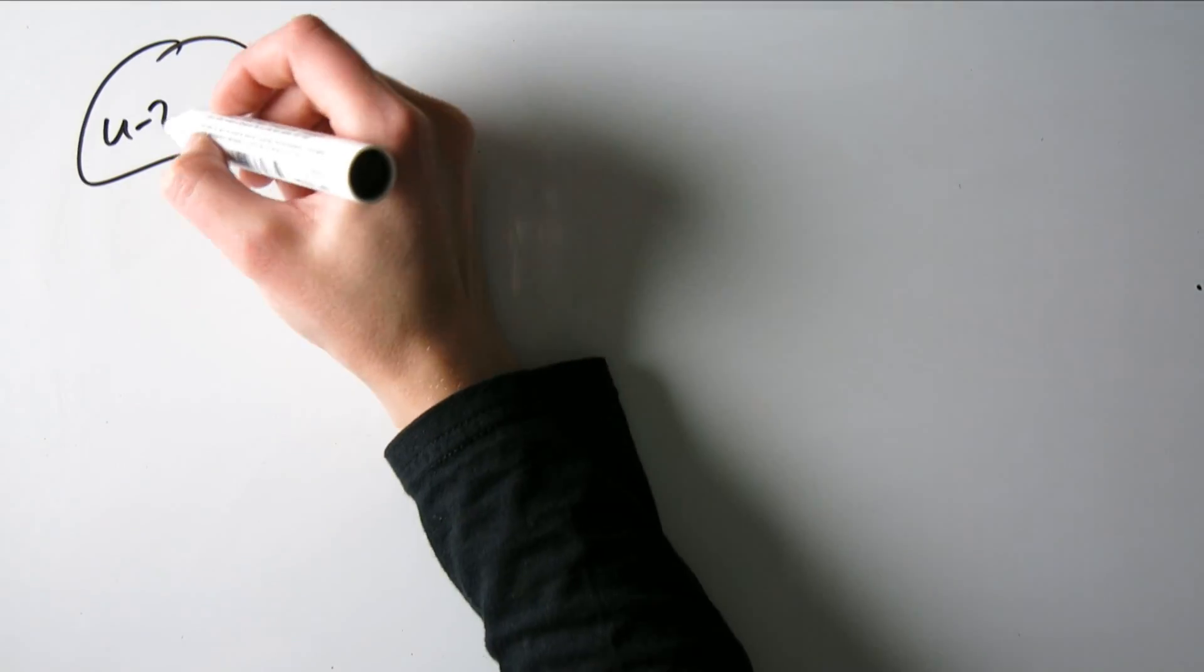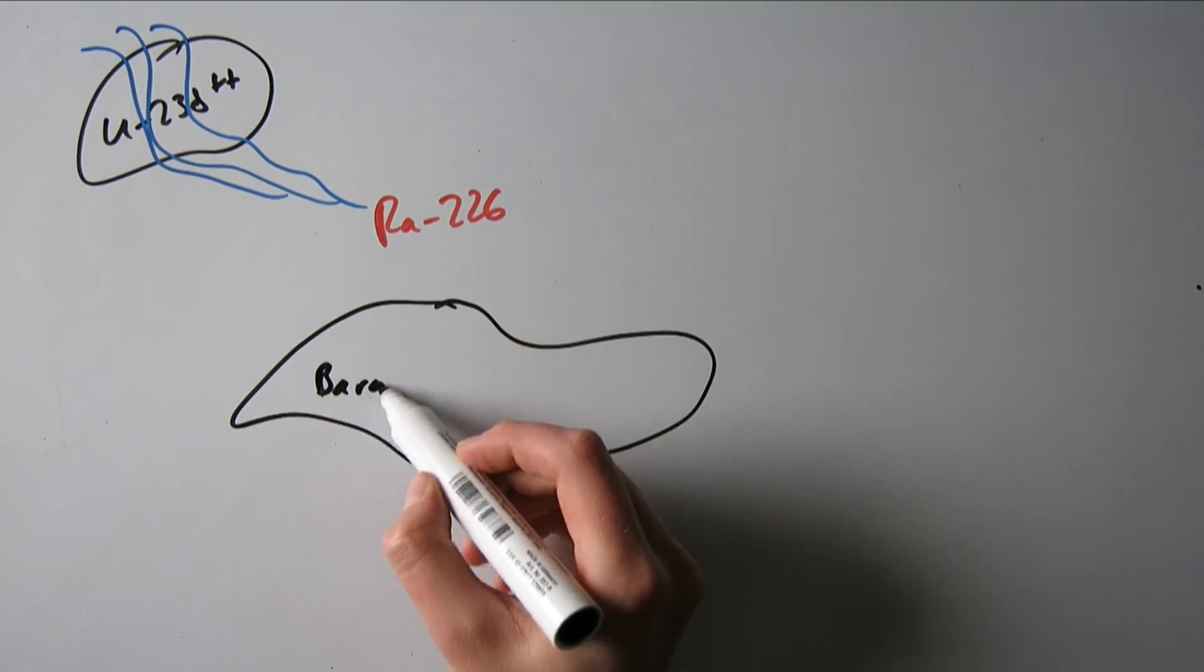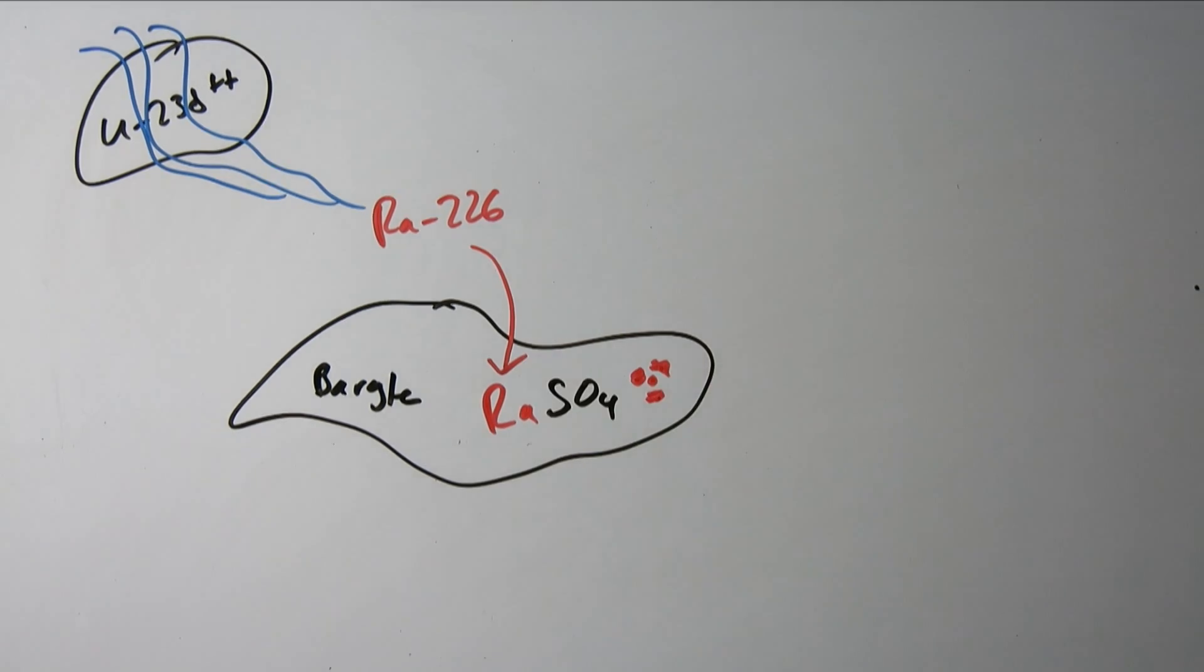Uranium is the mother of the radium in our barite. So radium is a decay product of uranium-238, that gets flushed out with water and diluted other substances, acids that flush it out, and then it ends up in the barite, replacing the barium with a radioactive radium atom.